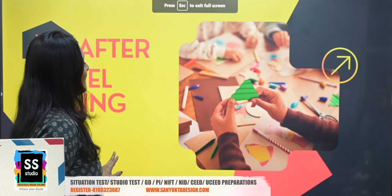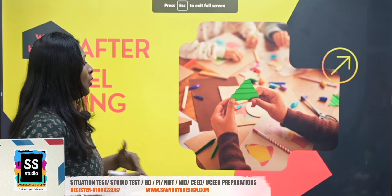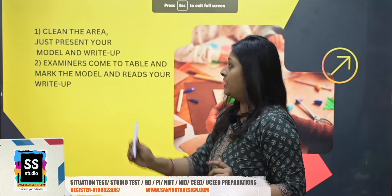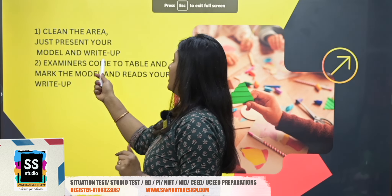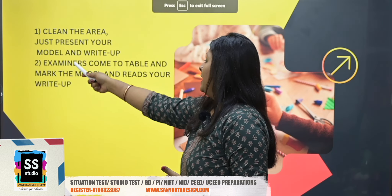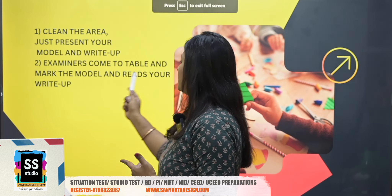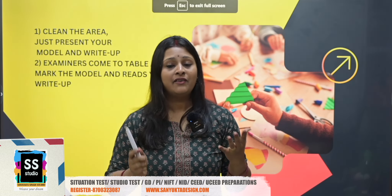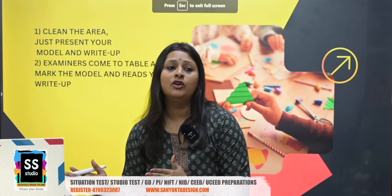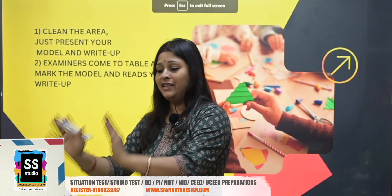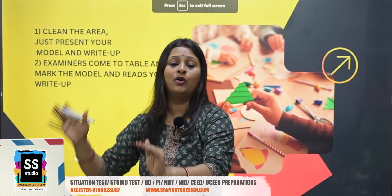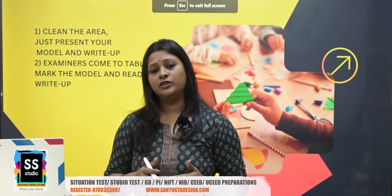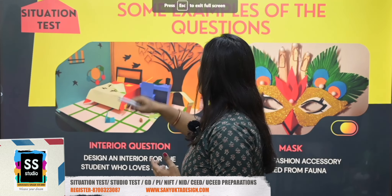What happens after your model has been made? When you have made a model in the exam, you have to clean the area. Just present your model and write-up. Examiners will come to the table, mark the model, and then read your write-up. Your model is not going to be submitted anywhere - it is going to be there on your table. The faculty members will come and judge your model.